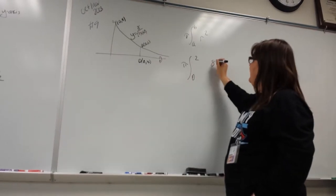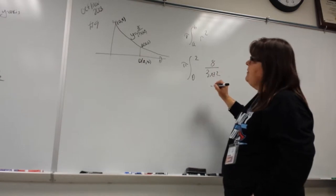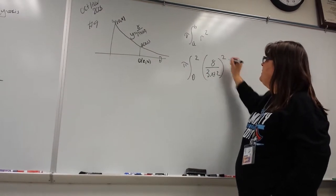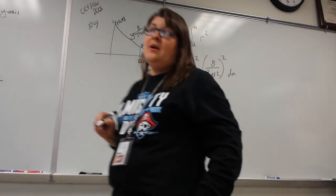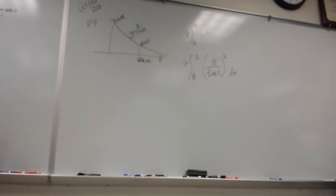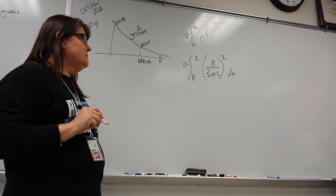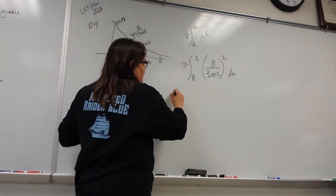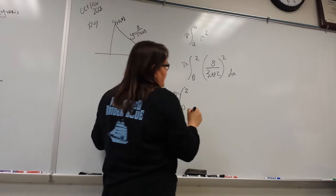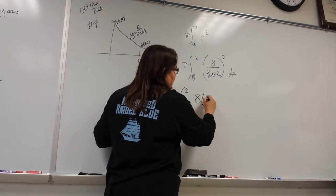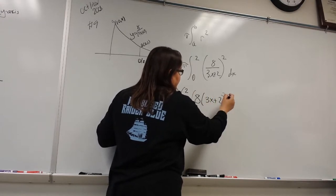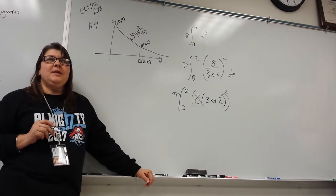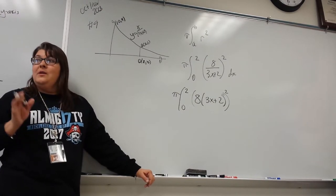That's the hard part — we've done the hard part. The way I did it was I rewrote it as 8 times (3x plus 2) raised to the negative one, then raised the whole thing to the second power, so it became negative two. Yes — so we have pi from zero to two, and then 8 times (3x plus 2) to the negative one, all squared, which is to the negative two. If Nick did it wrong but says all the right things, what might he have forgotten?